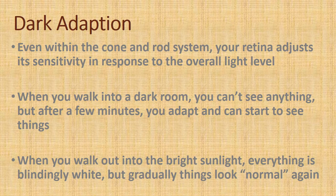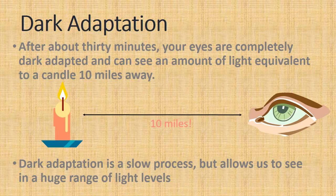Even within the cone and rod system, your retina adjusts its sensitivity in response to the overall light level. When you walk into a dark room you can't see anything, but after a few minutes you adapt and can start to see things. When you walk out into bright sunlight, everything is blinding. After about 30 minutes your eyes are completely dark-adapted and can detect an amount of light equivalent to a candle 10 miles away. Dark adaptation is a slow process but allows us to see across a huge range of light levels.